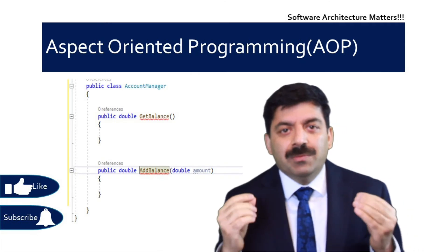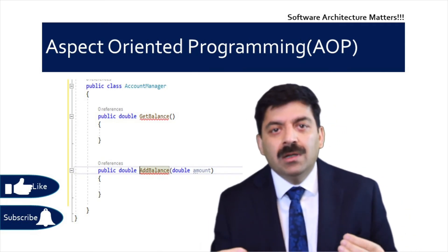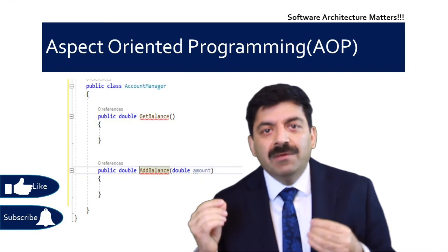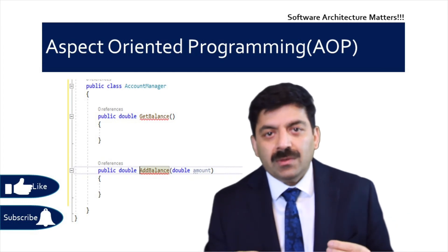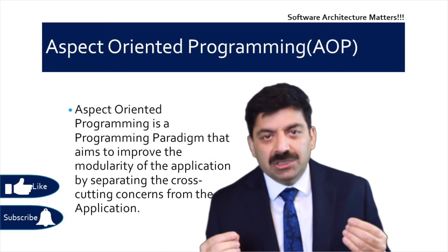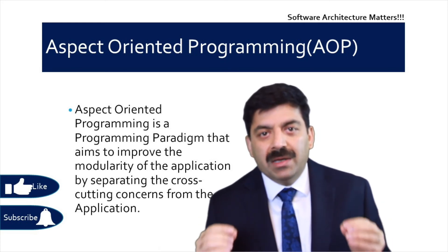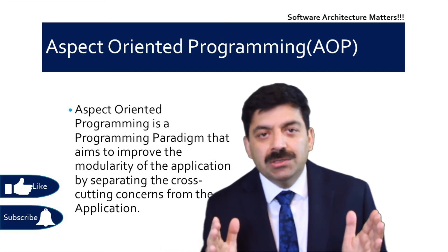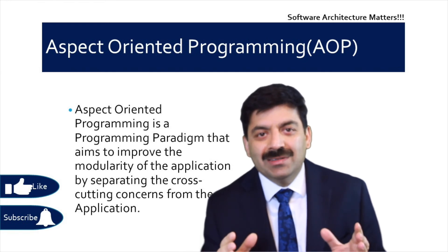That is what aspect-oriented programming addresses. Aspect-oriented programming is about taking these cross-cutting concerns away from your application — it's globalizing them. Aspect-oriented programming is a programming paradigm which increases the modularity of your application by removing cross-cutting concerns from your application.